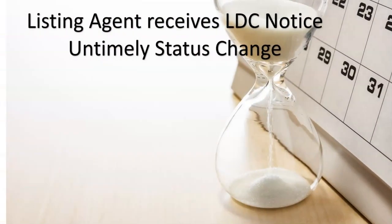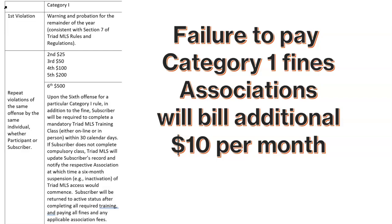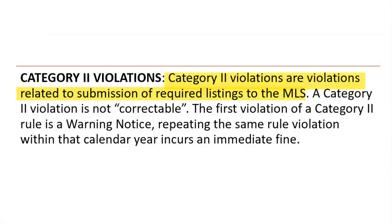LDC untimely status change notice: this is a violation that cannot be corrected, and the first violation notice is a warning and probation for the remainder of that calendar year. Upon the second notice for the untimely status change, the fine will be automatically issued. Failure to pay any Category 1 fine — the association will bill an additional $10 per month. Category 2 violations relate to submission of required listings.